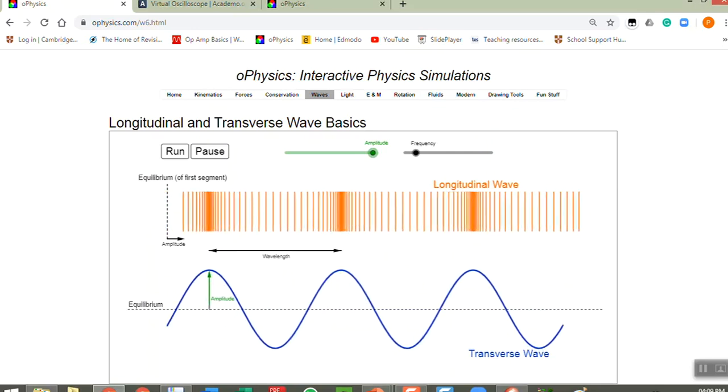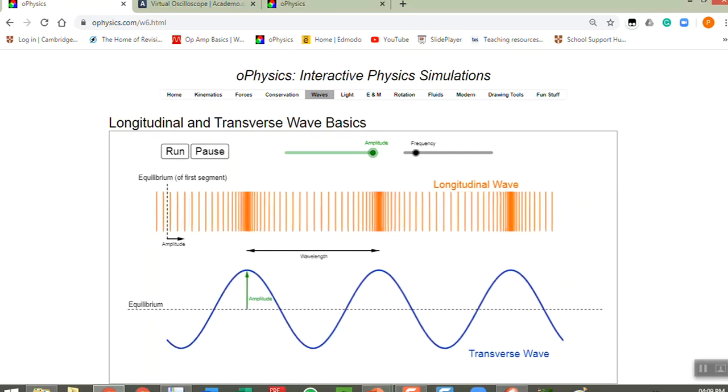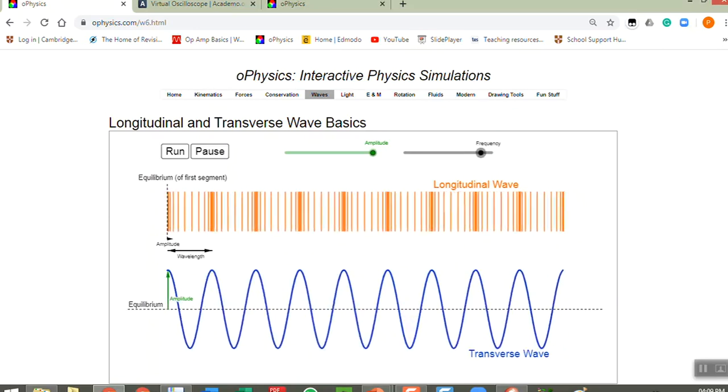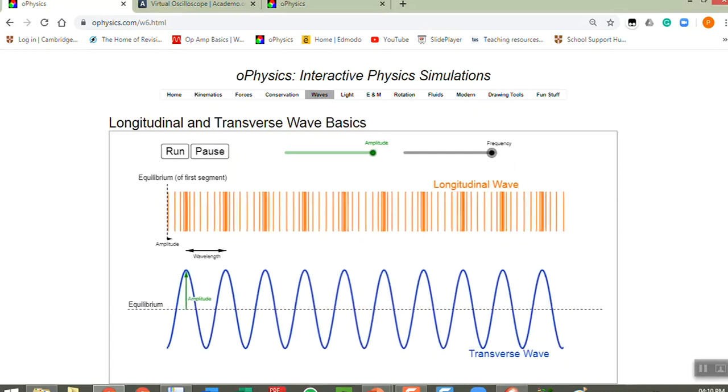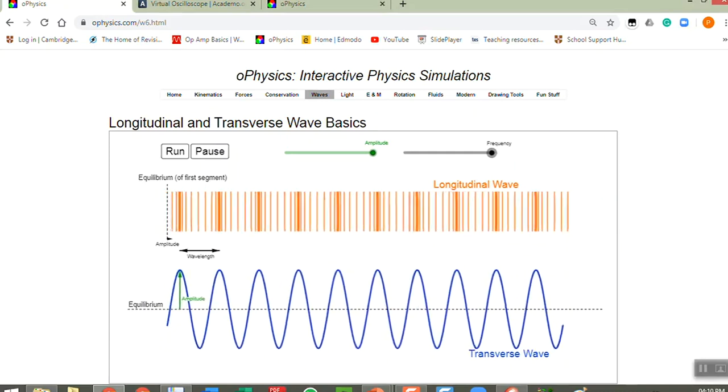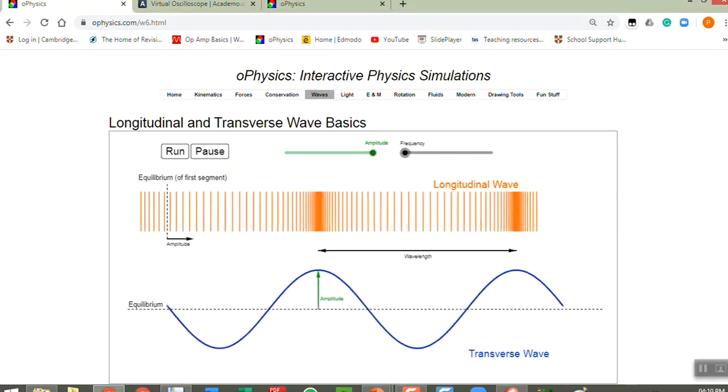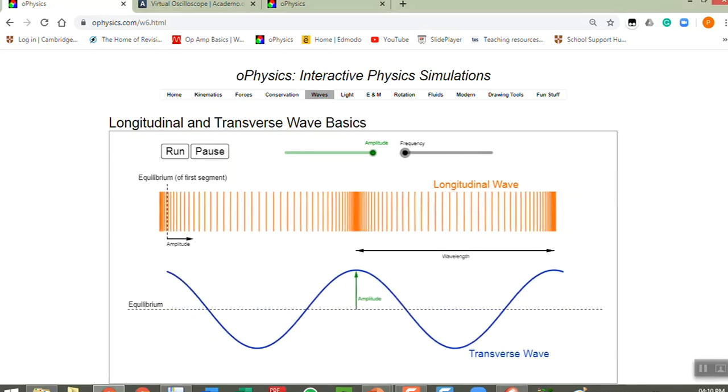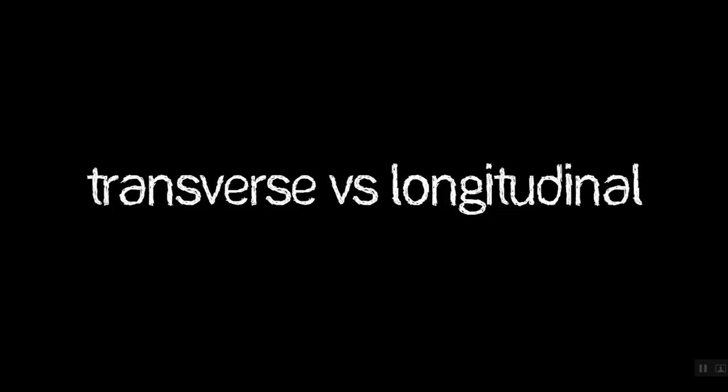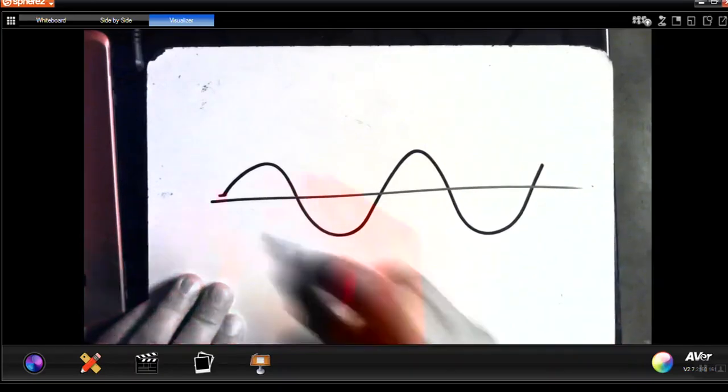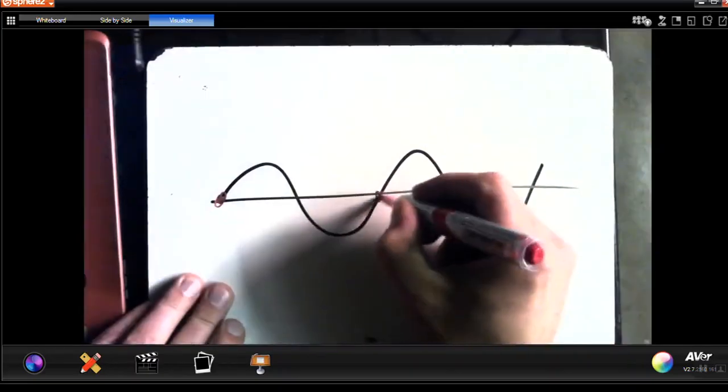The amplitude will say how high the transverse wave gets and how compressed the longitudinal wave gets, and the frequency, if you see here, is how often those waves appear. So a high frequency is a lot of waves per second and a low frequency is a smaller amount of waves per second.